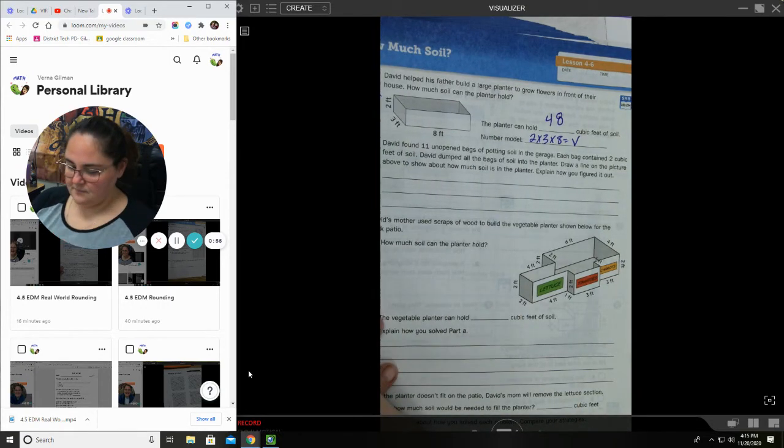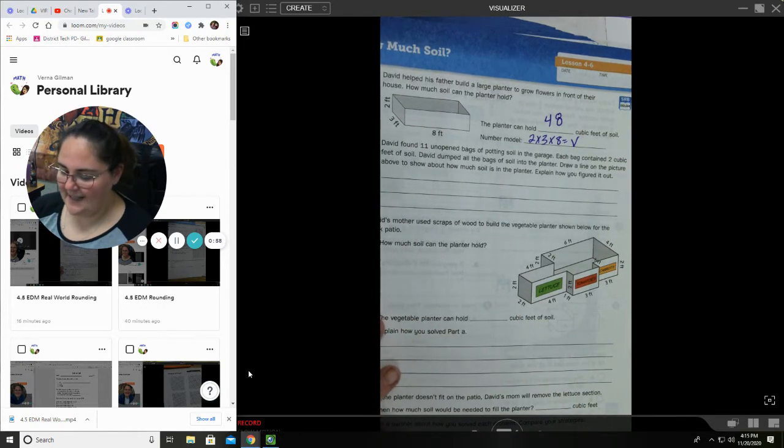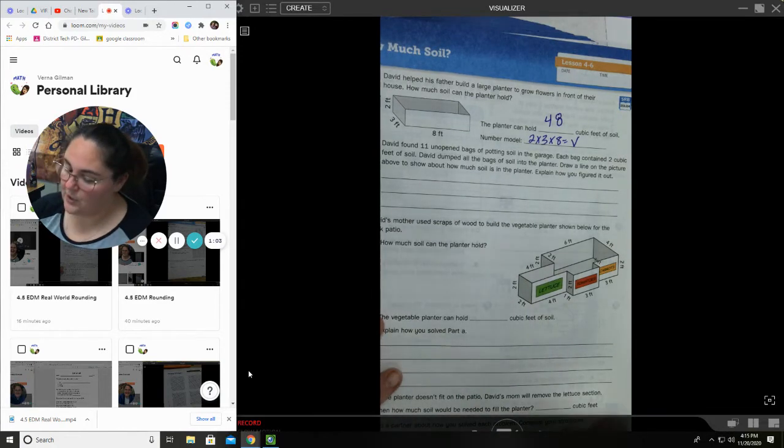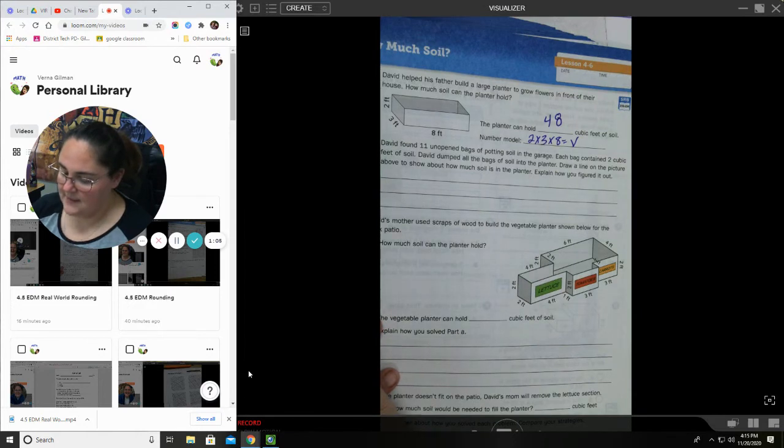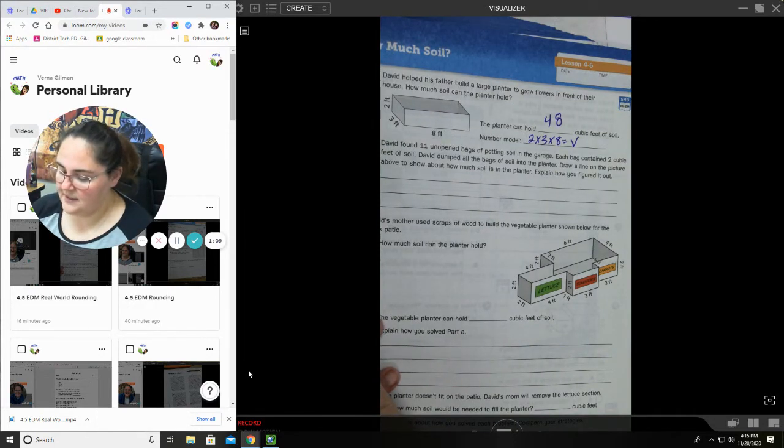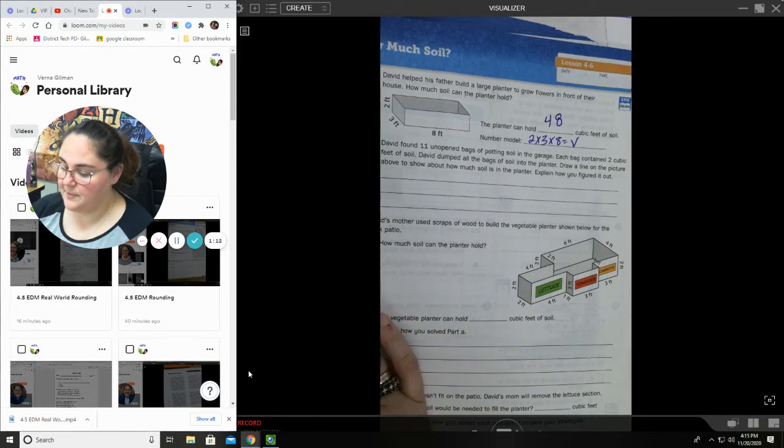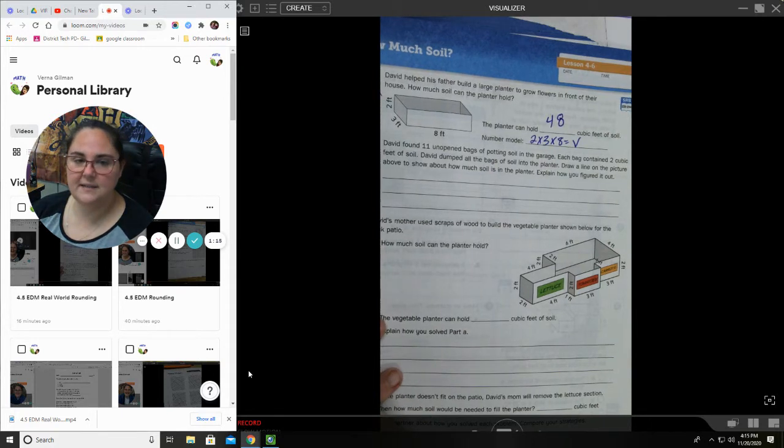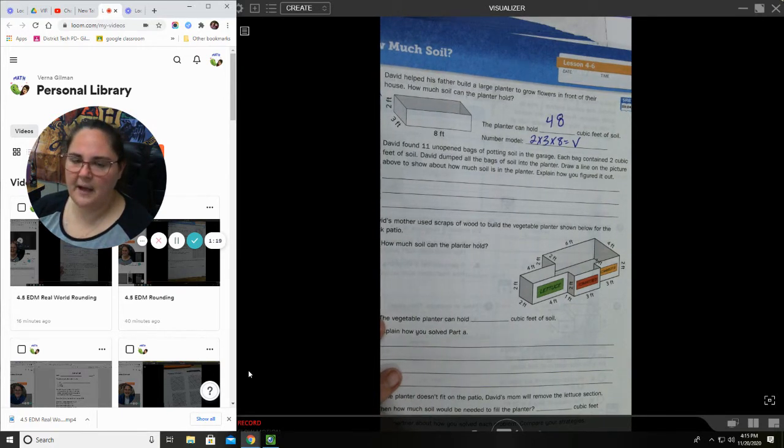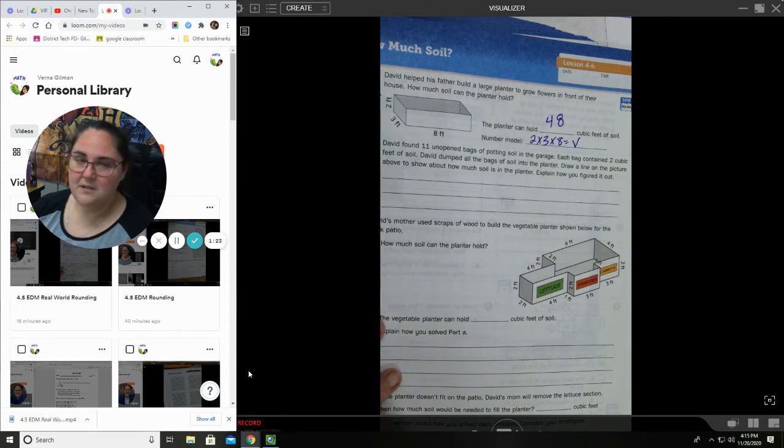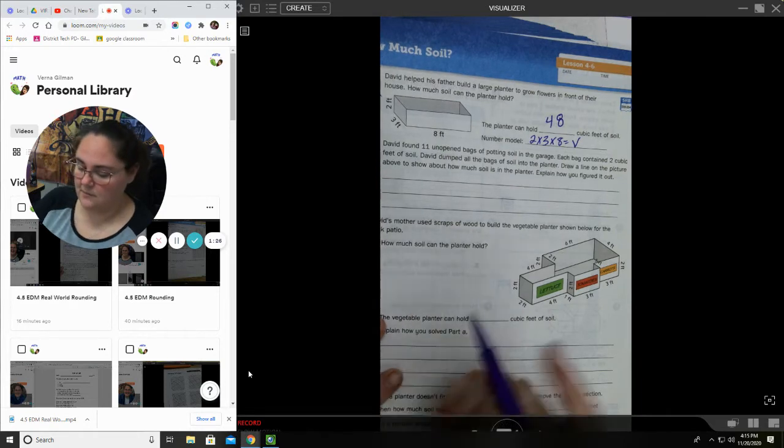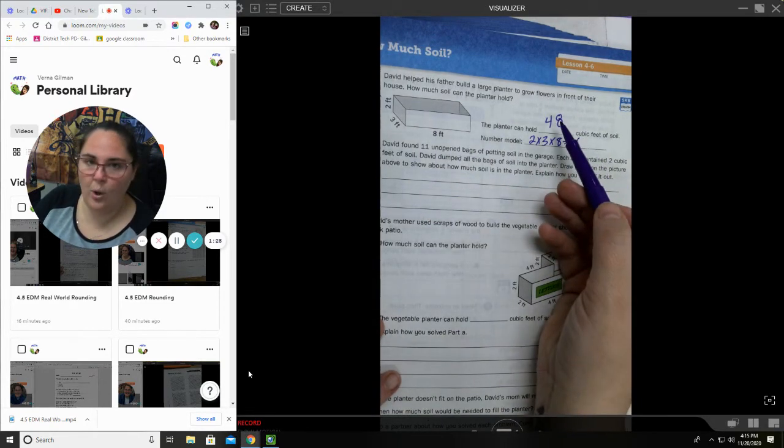Number two. It says, David found 11 unopened bags of potting soil in the garage. Each bag contained 2 cubic feet of soil. David dumped all of the bags of soil into the planter. Draw a line on the picture above to show about how much soil is in the planter and how you figured it out. Okay, let's think about this. 11 bags that are 2 feet each. So, that's about 22 feet of soil, right? And it can hold 48.